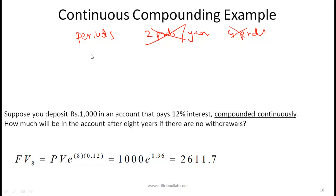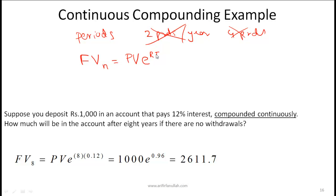The idea is that your interest is compounding continuously, so we don't need to get into the derivation. The formula that you need to know is very simple: the future value after n years is equal to present value times the mathematical e to the power of r — the interest rate — times t, which is the time in years.